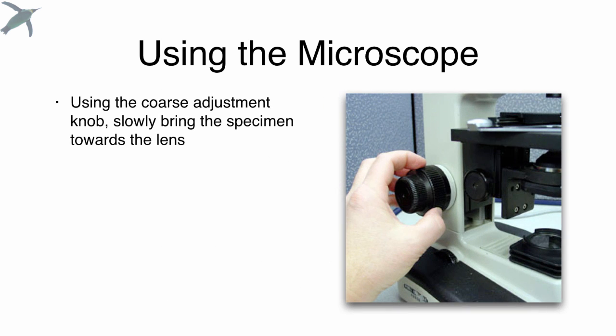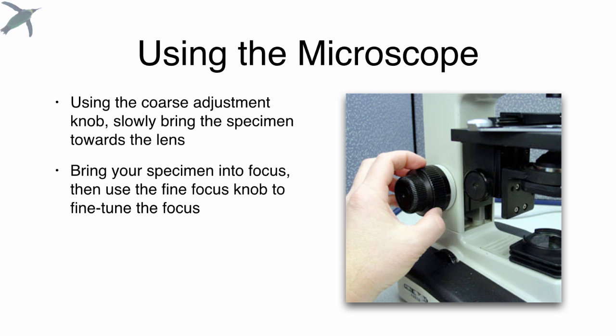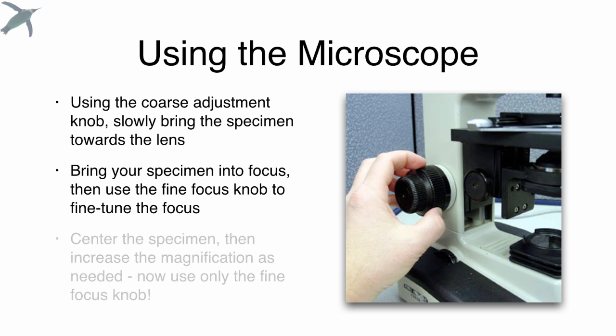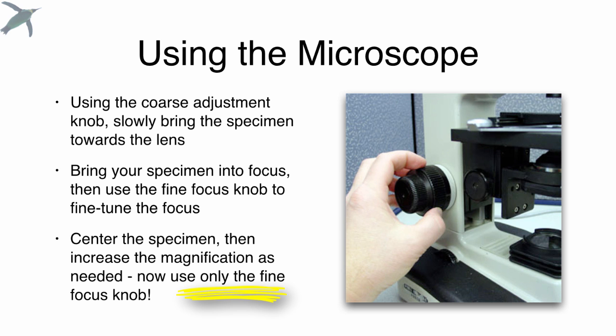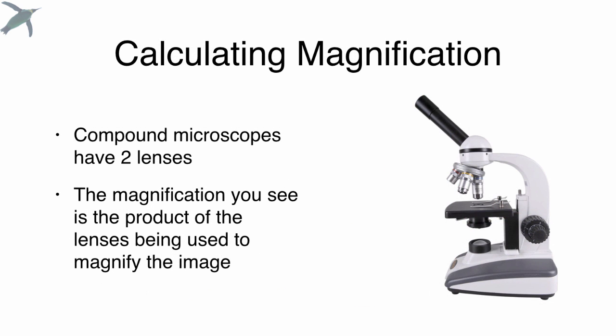The next thing you want to do is use that course adjustment knob to bring the specimen toward the lens. You're either moving the nose piece or moving the stage, but either way you're bringing them together, and you want to bring your specimen into focus. Then you can use the fine focus adjustment to fine tune that focus. You want to center the specimen, and then you can increase the magnification, and now you only want to use those fine focus knobs. The course adjustment is for scanning lens work only.